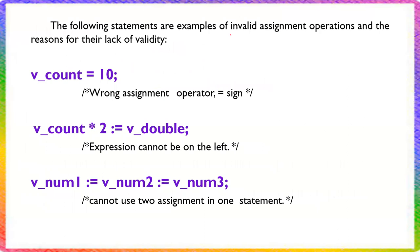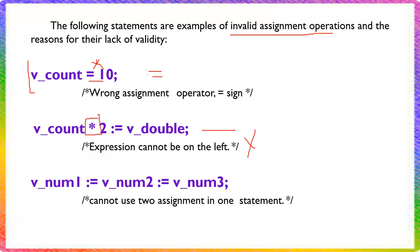Now for invalid assignment operation examples. First, using a plain equal sign (=) instead of colon-equal-to (:=) is invalid — in PL/SQL the assignment operator is := not =. Second, placing an expression on the left-hand side of the assignment, such as count * 2 := variable, is also invalid because the left-hand side must be a variable name only.